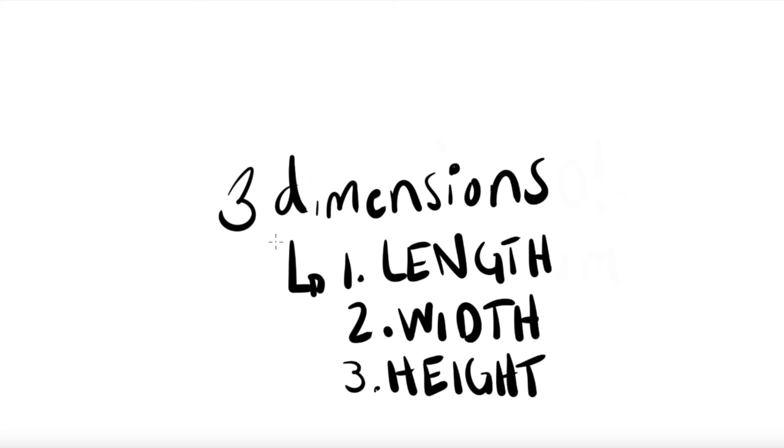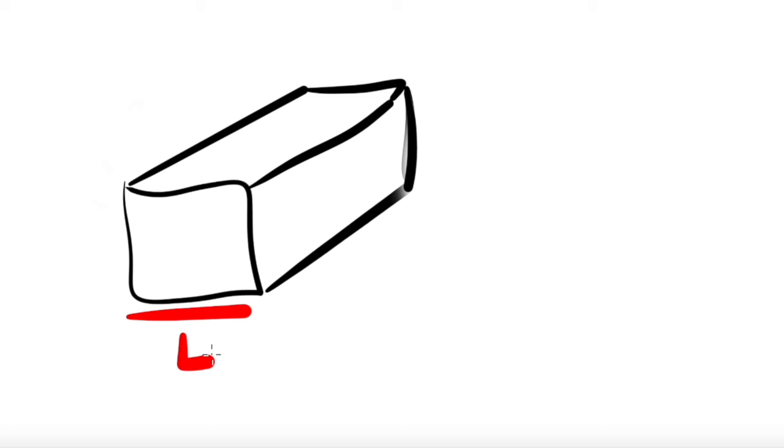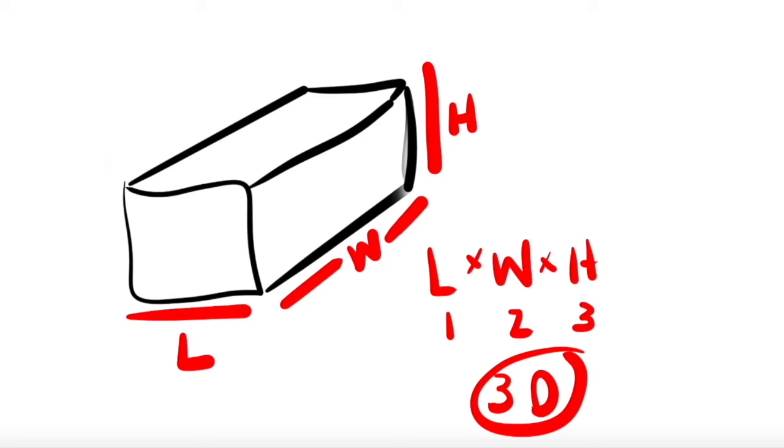Let's look at this rectangular prism and define which parts are the length, width, and height. There's three measurements which makes it three-dimensional.